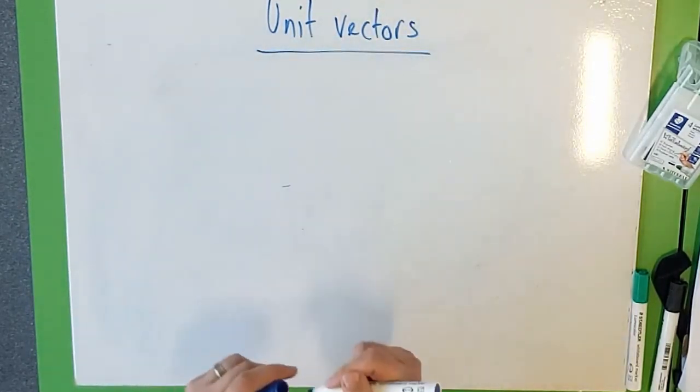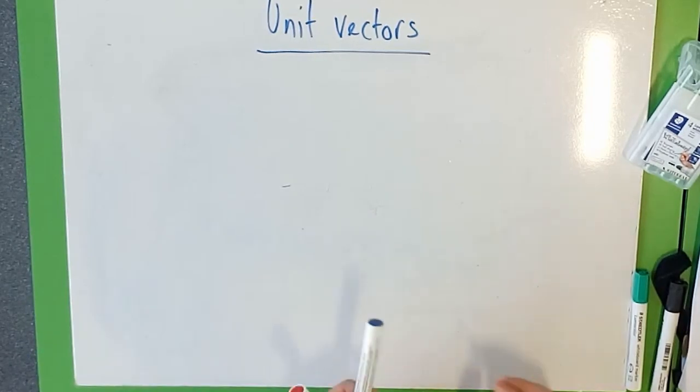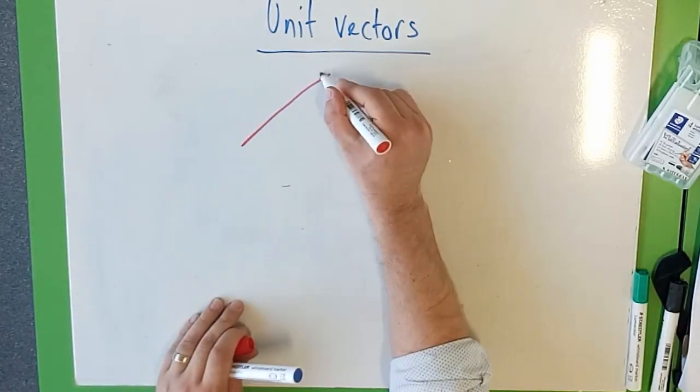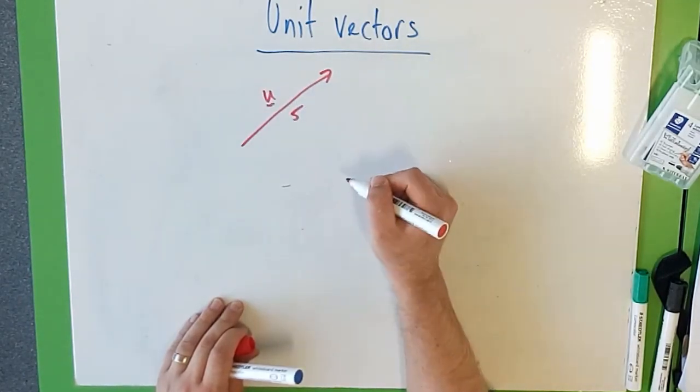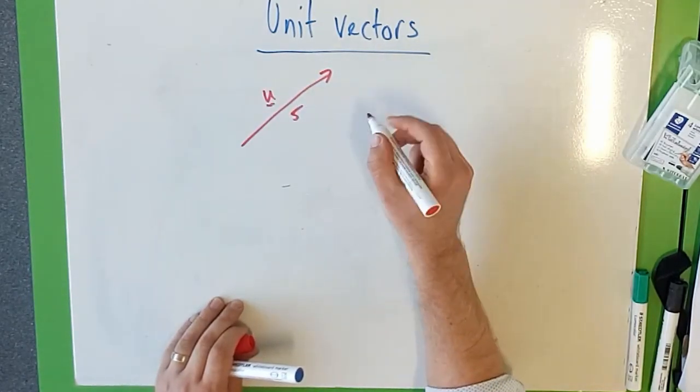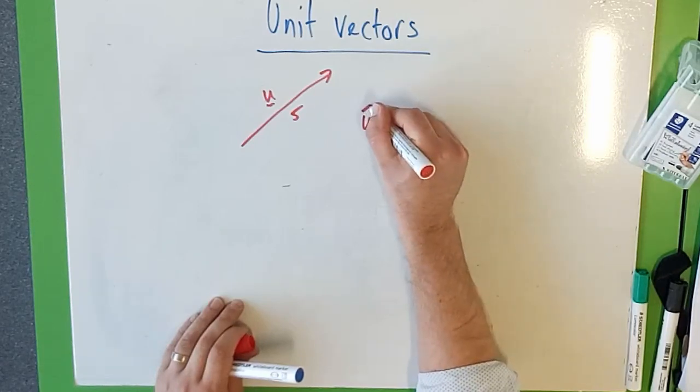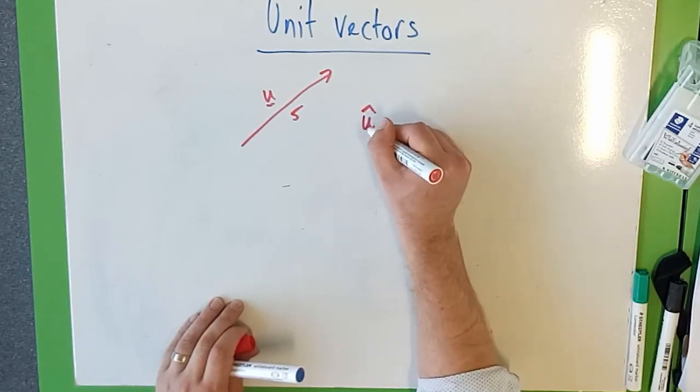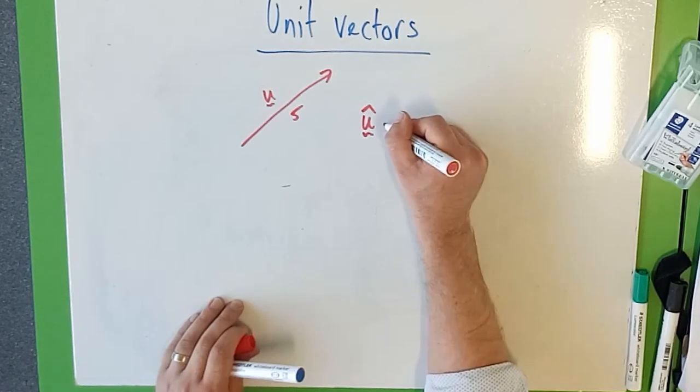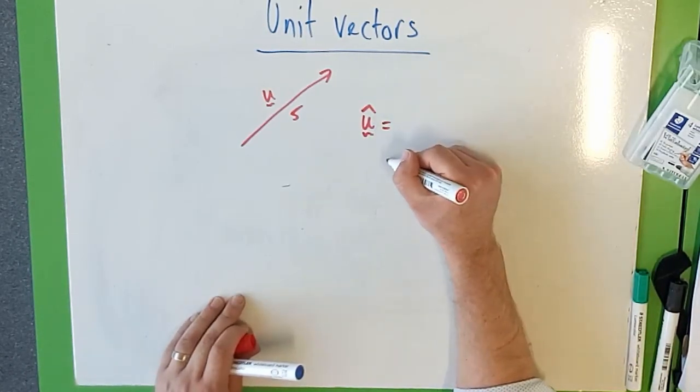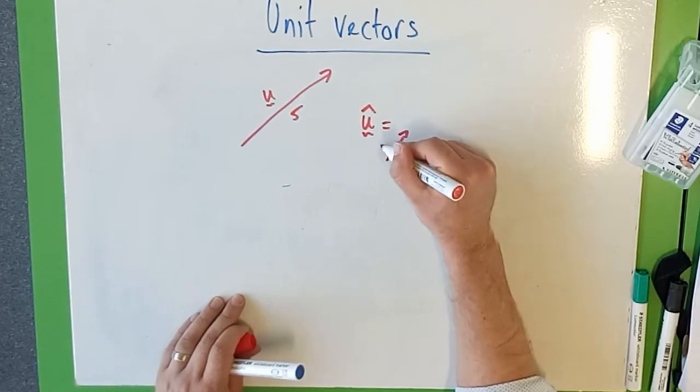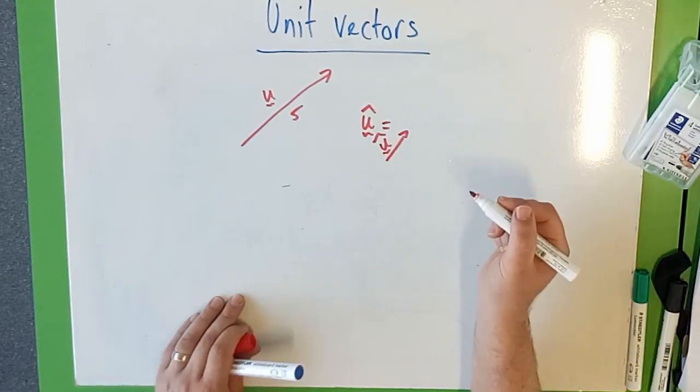So unit vectors are just like any other normal vector except they have a magnitude of 1. So instead of having vector u with a magnitude of 5, I want a unit vector. The unit vector which we represent with a little hat, so you say u hat, is going to equal, we want it to go in the same direction of u but only have a magnitude of 1.